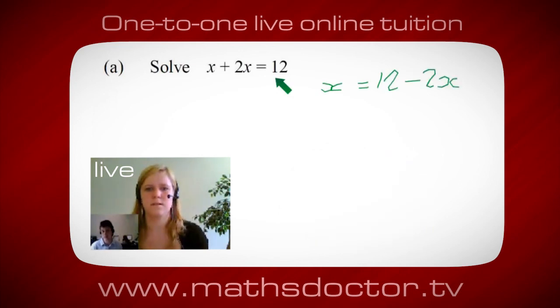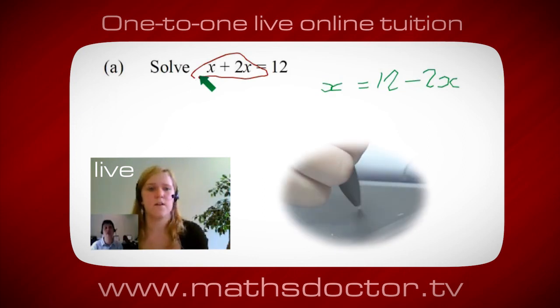Okay. So, a lot of the time we want to get x by itself. But, what we want to do first is get all of these x's together. So, can you see anything we can do with this? Get all these together in one place. Oh, okay. It's 3x, isn't it? Yeah, absolutely. So, 3x equals 12.